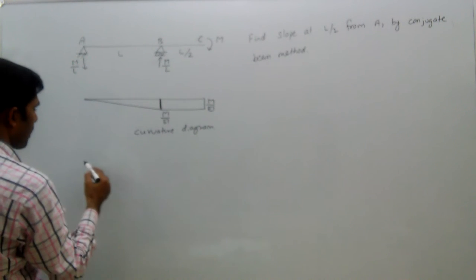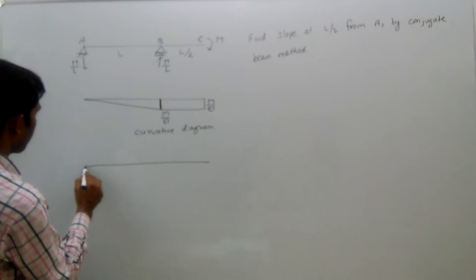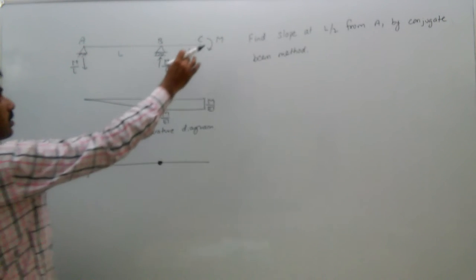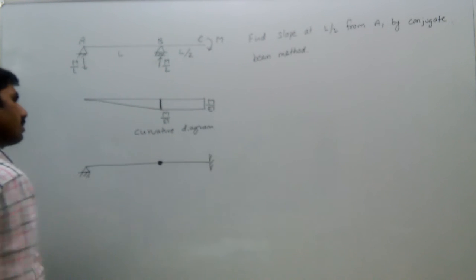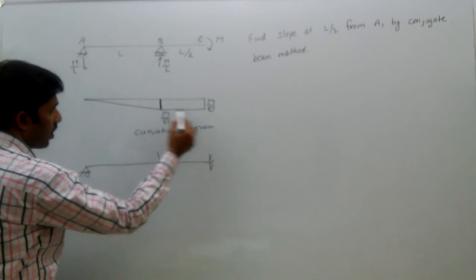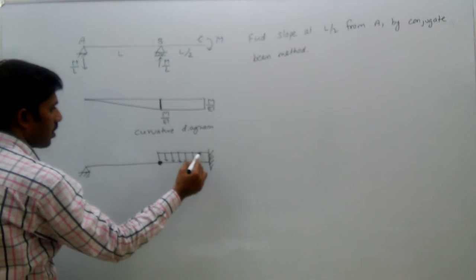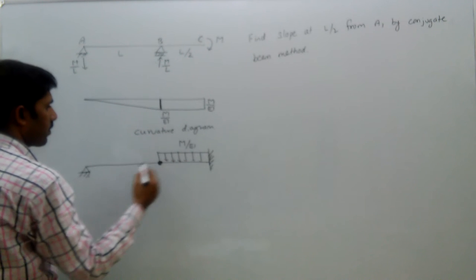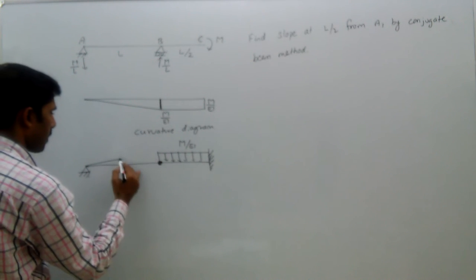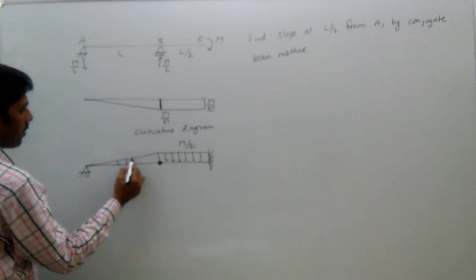Now, what is the conjugate beam? In the conjugate beam: a simple support remains a simple support. An internal support becomes an internal hinge. A free end becomes a fixed support, and a fixed support becomes a free end. This is the conjugate beam. The loading on the conjugate beam: here there is uniform loading of intensity M by EI, and here there is a varying triangular load.